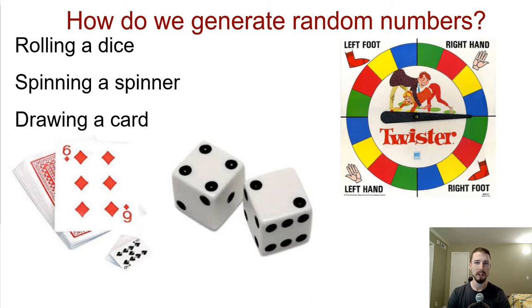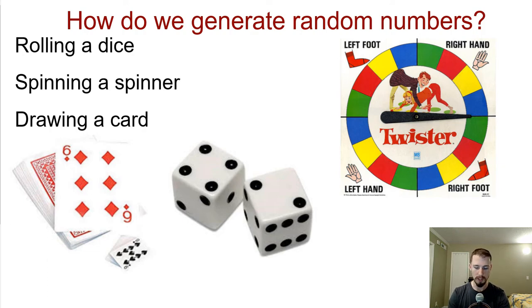So how do we generate random numbers? We talked about three different methods used in games: rolling a dice, spinning a spinner, or drawing a card. Those are ways that we can generate random numbers.